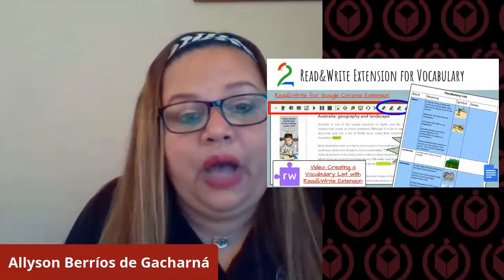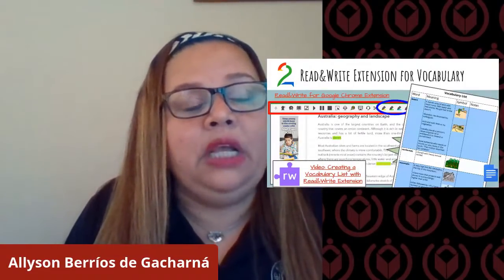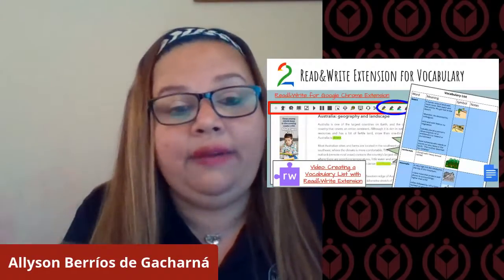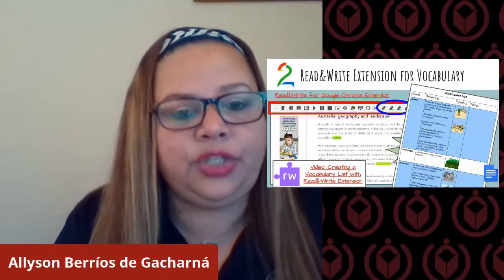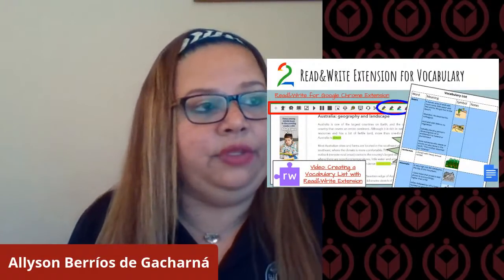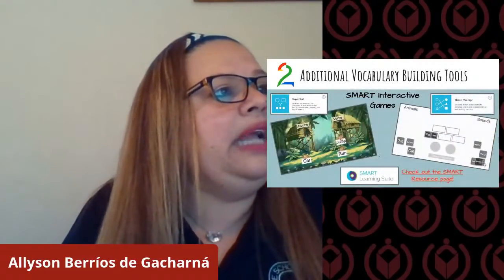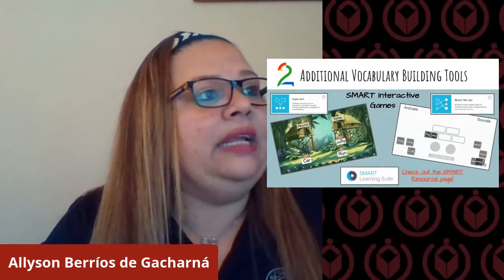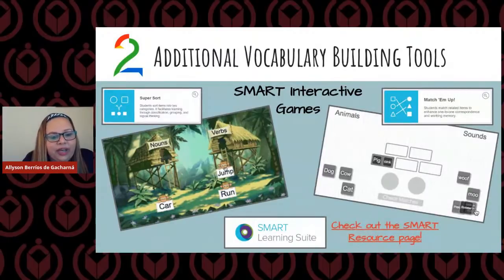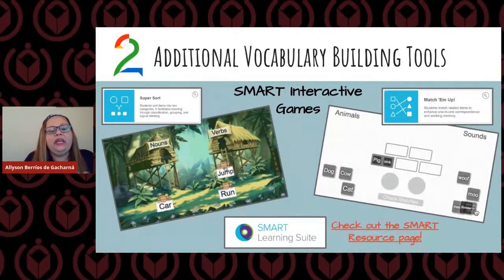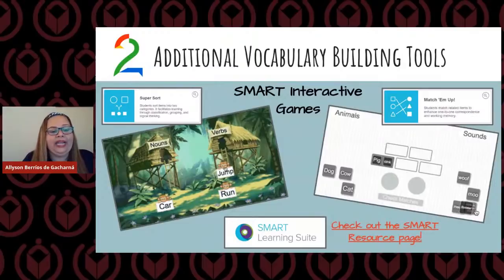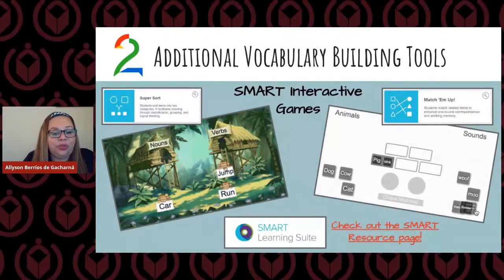Noelle will show you how to produce this live if we have time, and there's also a video linked on how to do it. Keep in mind that when the Google Doc produces the list, it will give you different meanings, so go back to the context and make sure those words correlate to the reading. And then there are smart interactive games — supersorts, matchup games, graphic organizers that are interactive. Students can interact in a fun way. Check out the Smart resource page for more ideas, and EdTech has produced many tutorials on how to interact with these tools as well.